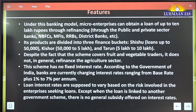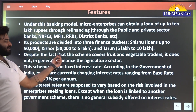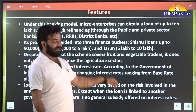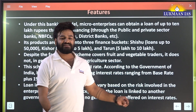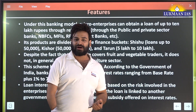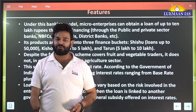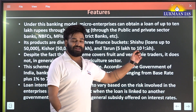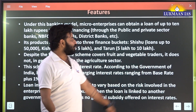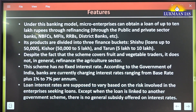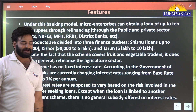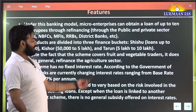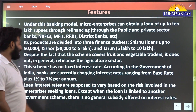The loan products under Mudra are categorized into three buckets. The first is Shishu — for startups and new micro units — with loans up to Rs. 50,000. Kishor is for slightly grown businesses, with loans from Rs. 50,000 to Rs. 5 lakhs. Tarun covers Rs. 5 lakhs to Rs. 10 lakhs.